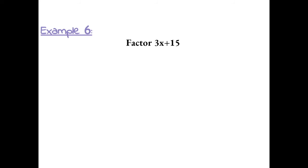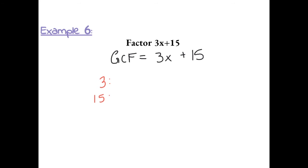Example 6: factor 3x plus 15. We want to find the greatest common factor between 3x and 15. If 15 also had an x, then x would be part of the common factors, but because it doesn't, x is not common between both terms. So we look at what numbers are common between 3 and 15. Factors of 3 are 1 and 3; factors of 15 are 1, 3, 5, and 15. So their greatest common factor is 3.